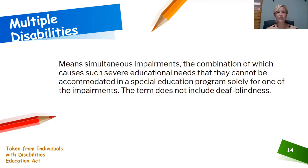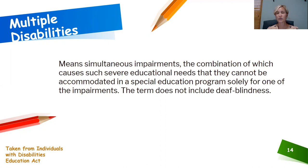Multiple disabilities looks at simultaneous impairments, the combination of which causes severe educational needs that cannot be accommodated by a special education program solely for just one of the impairments. The term does not include deaf-blindness, as that has its own category.